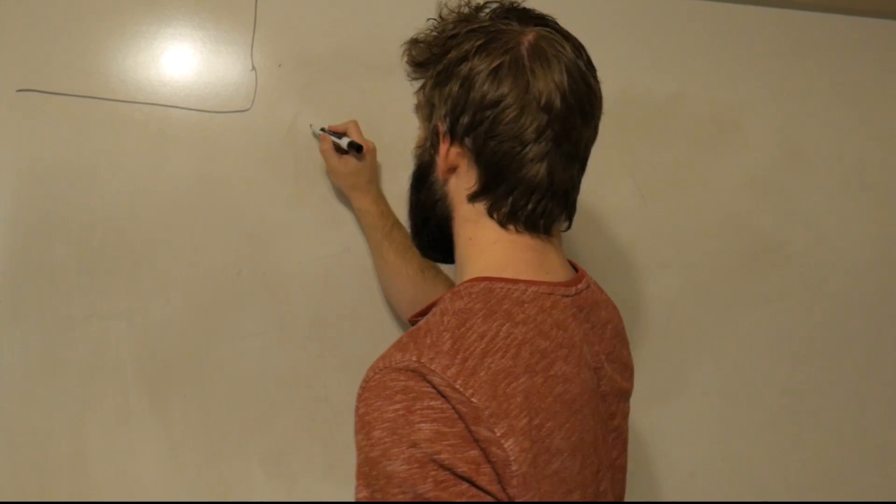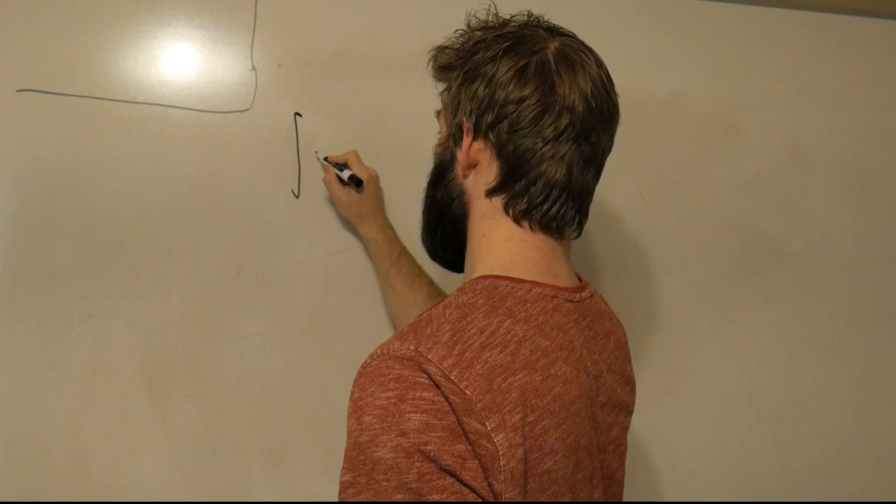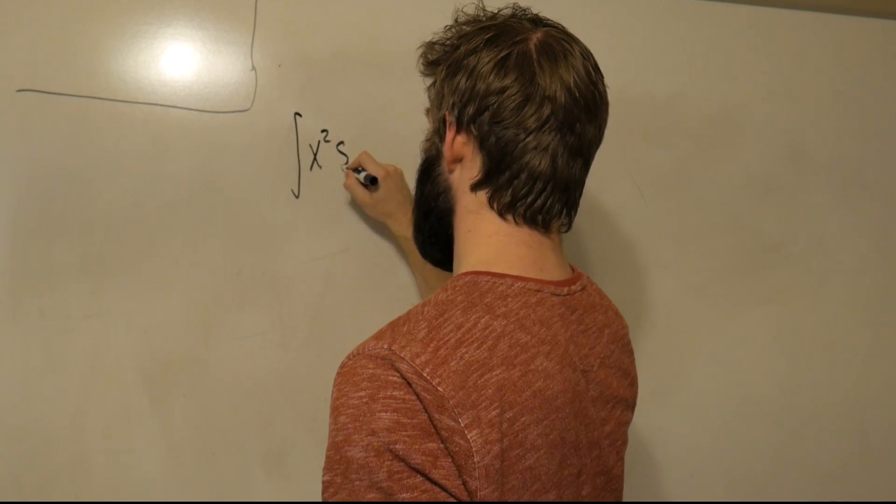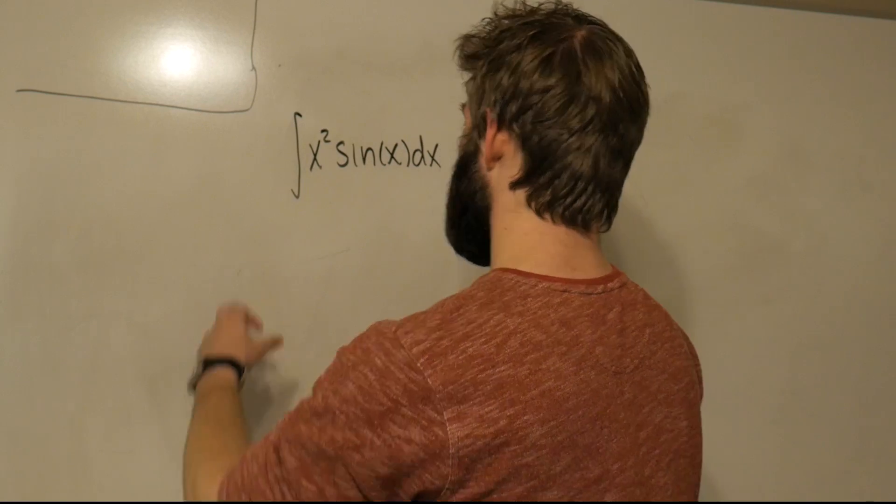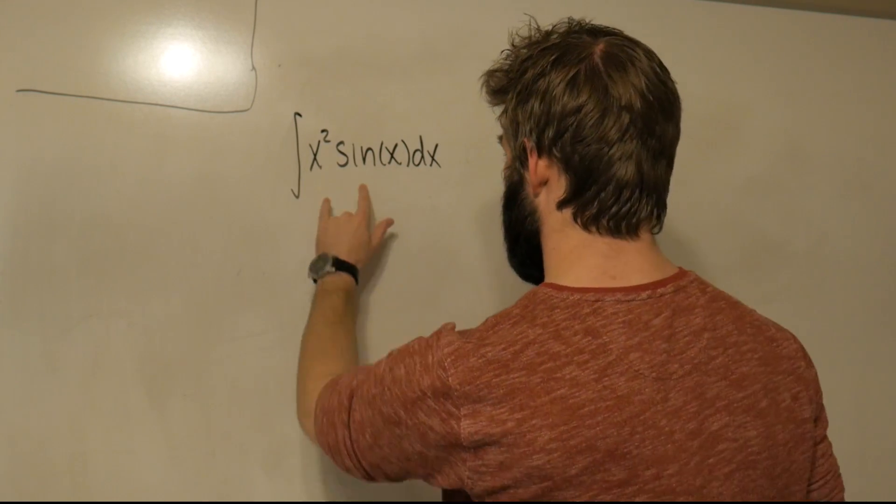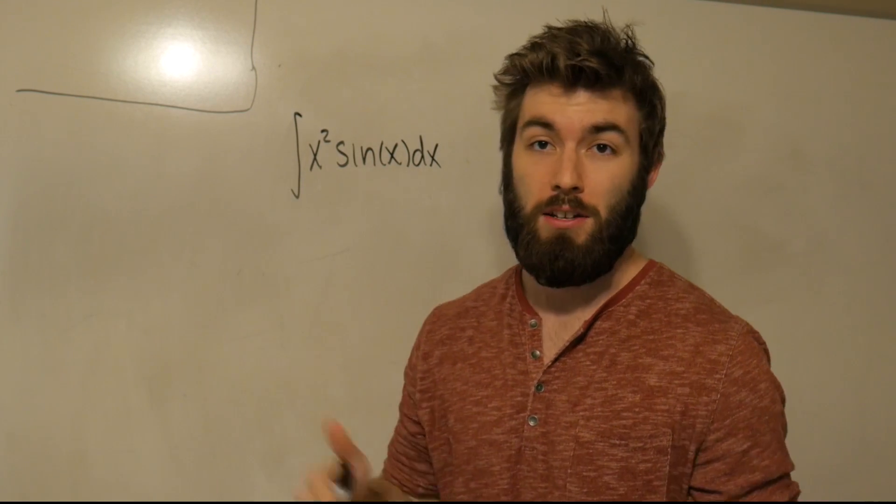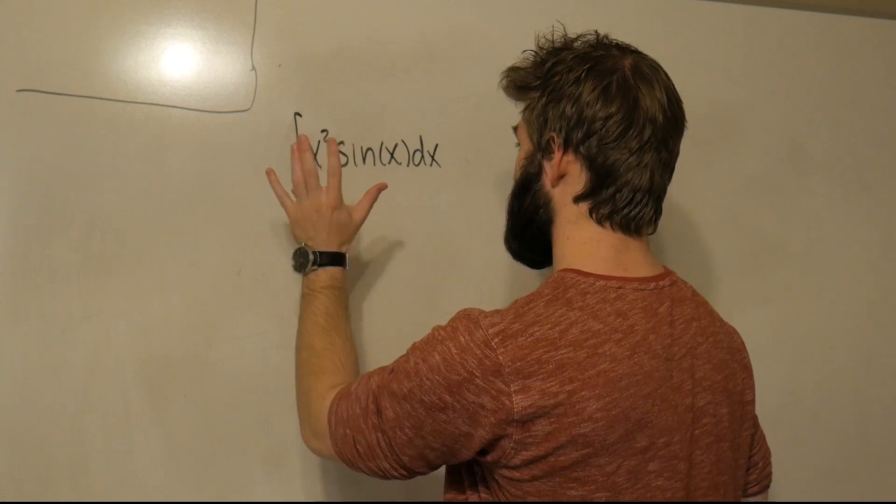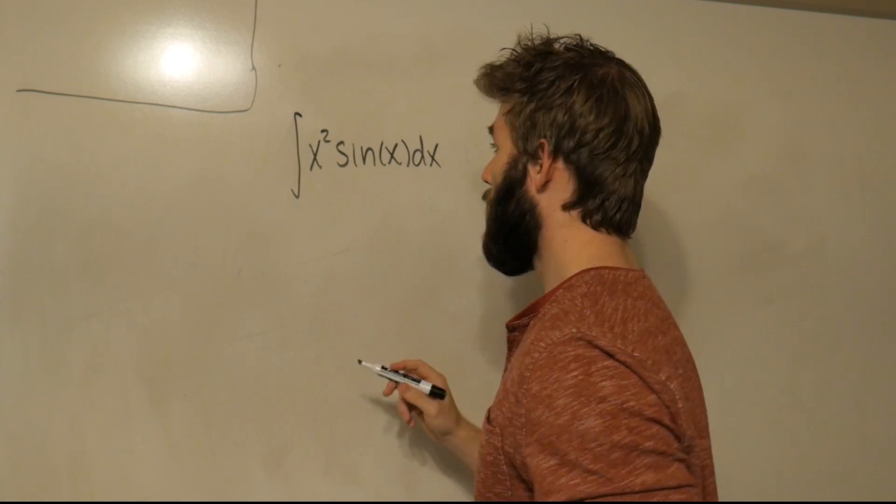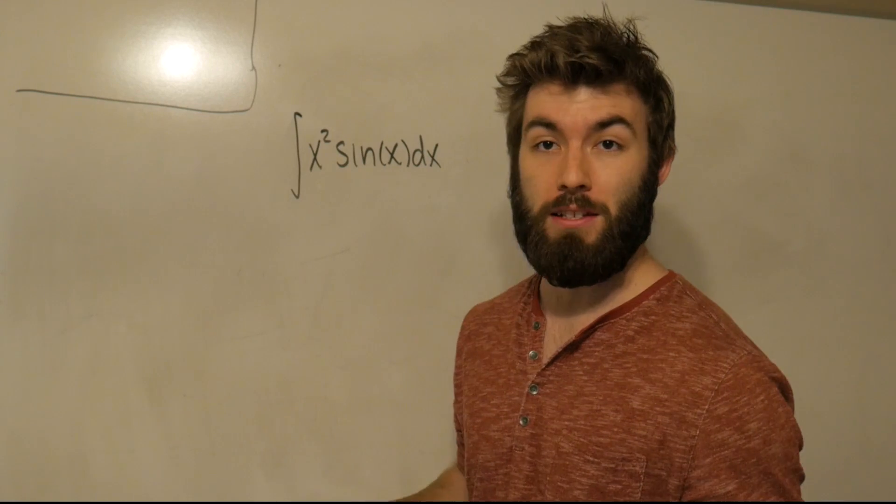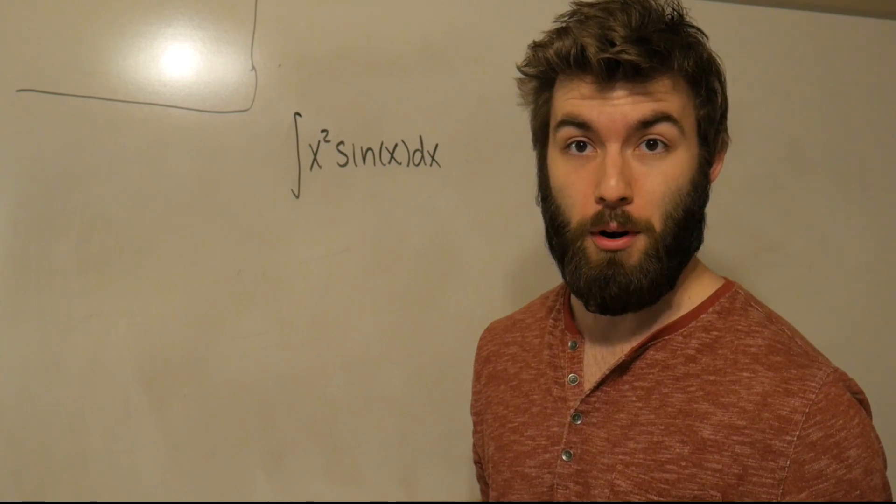So I thought it would be fun to actually do the integral that they do in the movie. We're going to be integrating x² sin(x) dx, and we're not going to put limits of integration on this because this is an odd function. We'd have to choose a non-symmetric interval just to make sure that this doesn't go to zero because that would be boring. But anyways, let's just carry out with this integral as if we were using integration by parts.